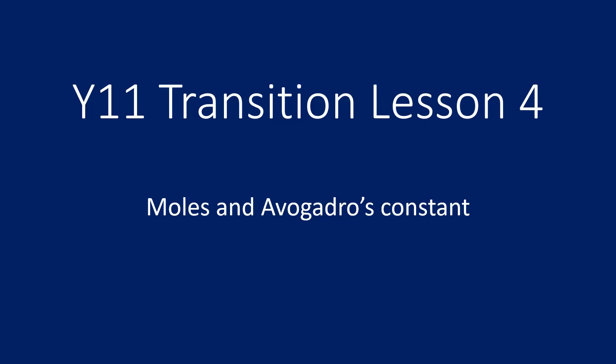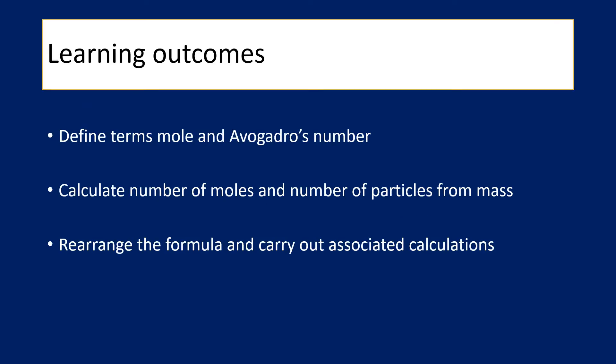This is lesson four in a series of four looking at the transition from GCSE up to A-level, and this lesson is going to focus mostly on maths and mole calculations and use of Avogadro's constant. We're going to look first at definitions for mole and Avogadro's constant, then carry out some calculations for moles and numbers of particles, and also any associated calculations from rearrangements.